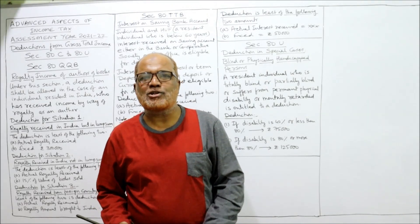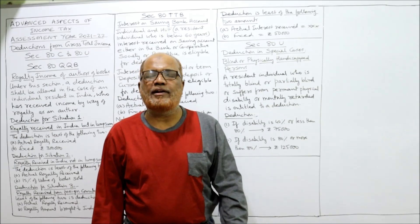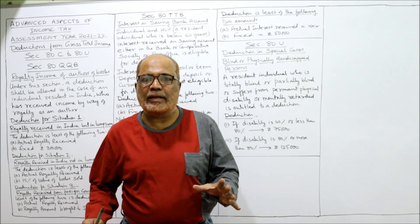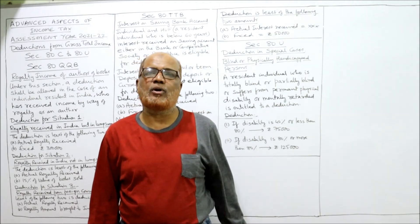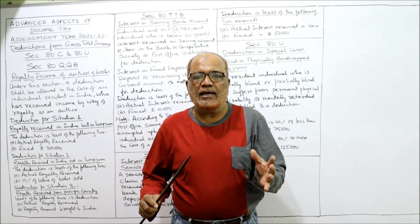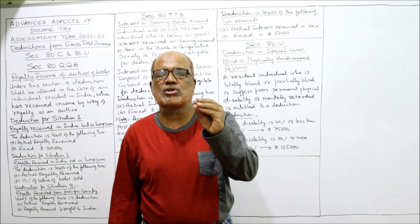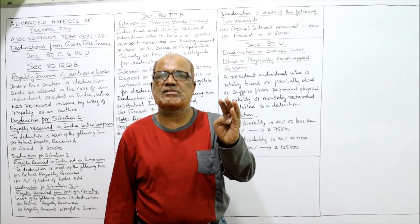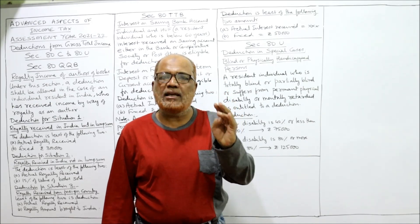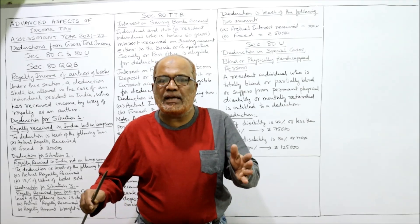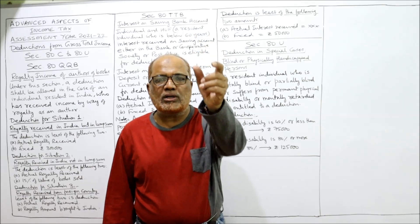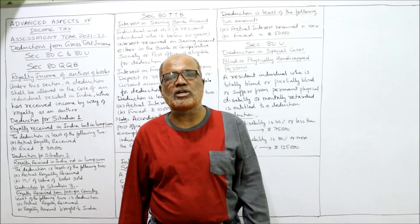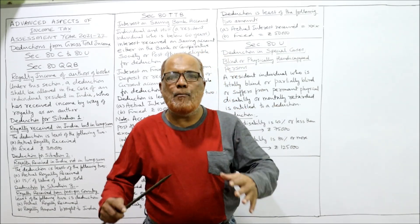Hello everyone, welcome to my channel. I'm Hashem Ali Khan. This is the last video on deductions from GTI — gross total income. I have already completed four videos on theory regarding deductions available from gross total income. Gross total income is the aggregate of the five heads of income: income from salary, house property, profits and gains of business and profession, capital gains, and income from other sources. From GTI, deductions are allowed under sections 80C to 80U.